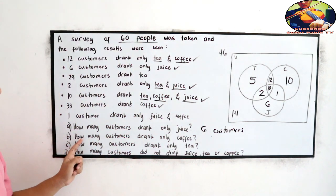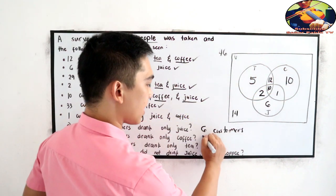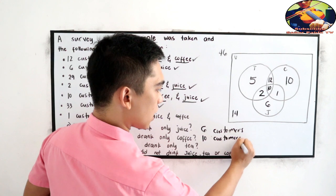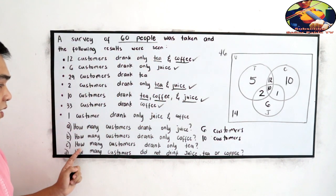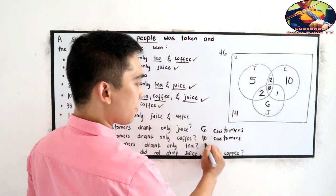Letter B, how many customers drank only coffee? Coffee. So 10. Answer C, how many customers drank only tea? Tea. So there are 5.